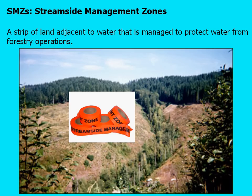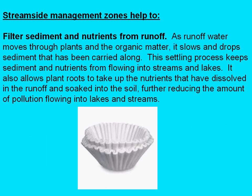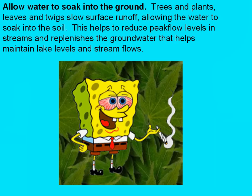Streamside management zones serve as a filter, keeping nutrient loads from fertilizing and keeping sediment from harvesting out of streams. They allow water to soak into the ground like a sponge — when runoff hits a forested area with many roots, those roots and the forest floor's humus layer and organic material act like a sponge, reducing stream levels and actually replenishing groundwater by slowing water down.